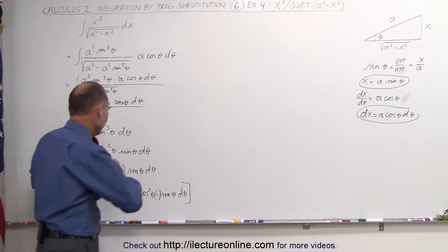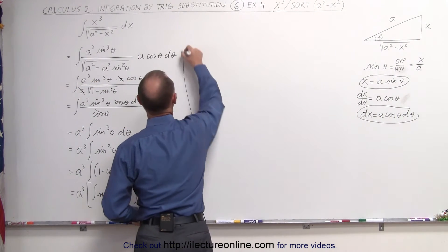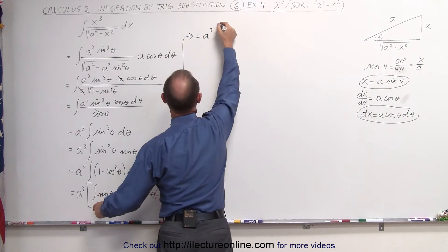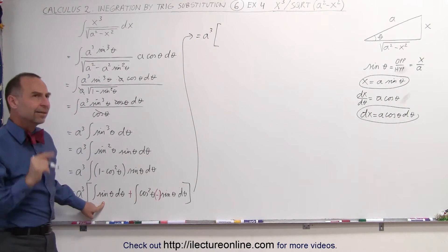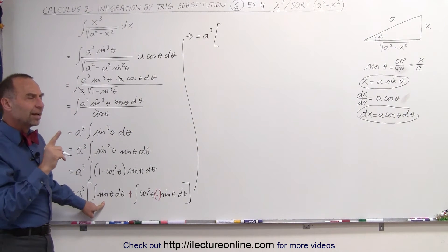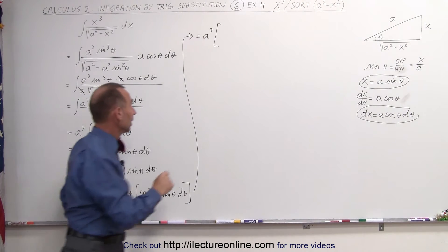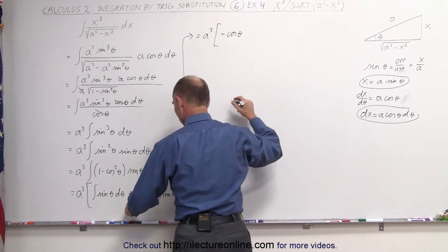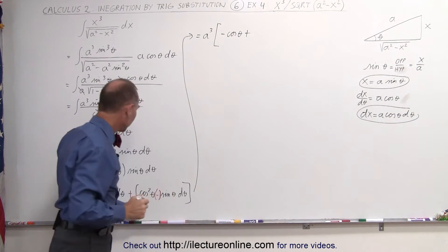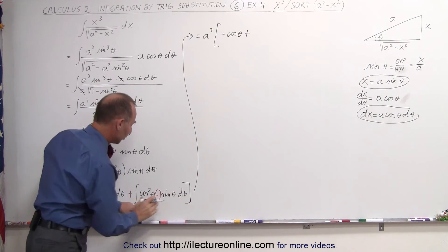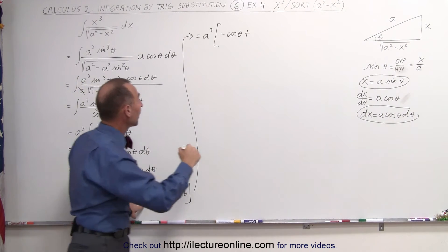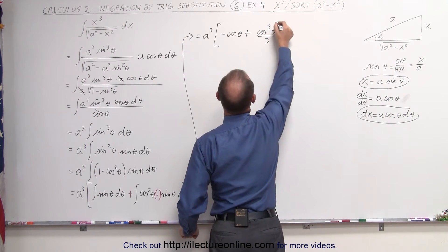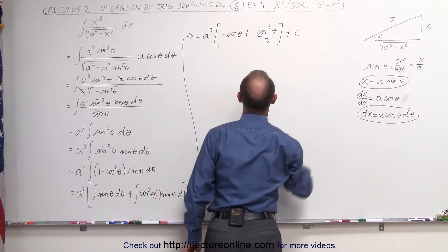Now we're ready to integrate. This is equal to a cubed times: the integral of sine of theta d theta gives negative cosine of theta, plus the cosine cubed of theta divided by 3, plus a constant of integration.